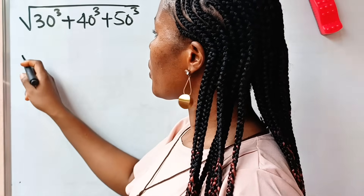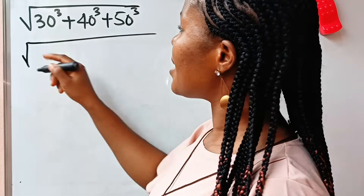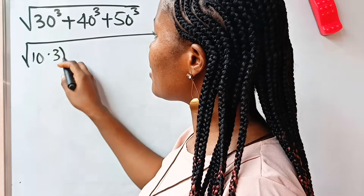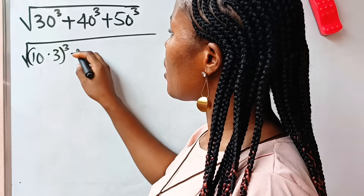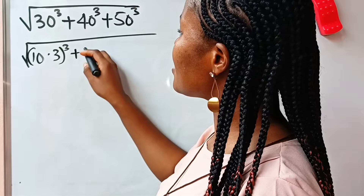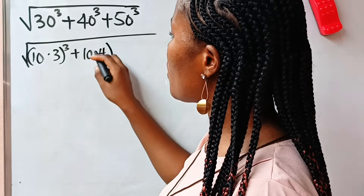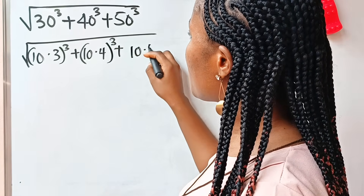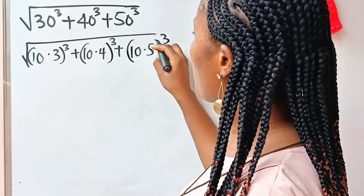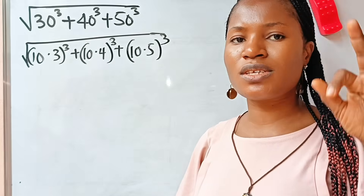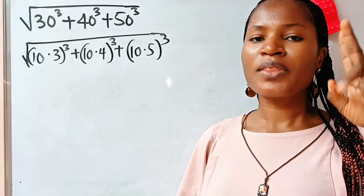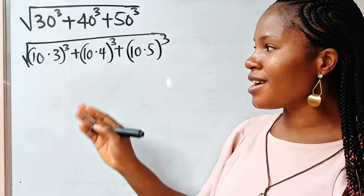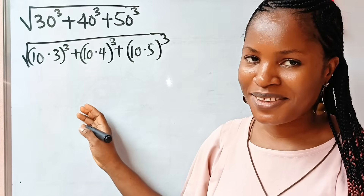Now first of all, 30 can be written as 10 multiplied by 3, raised to the power of 3. Plus this is 10 multiplied by 4, raised to the power of 3. Plus this is 10 multiplied by 5, raised to the power of 3. Now I'm going to solve this using two methods. The second method is the easiest and the fastest, so let's start with the most difficult method.